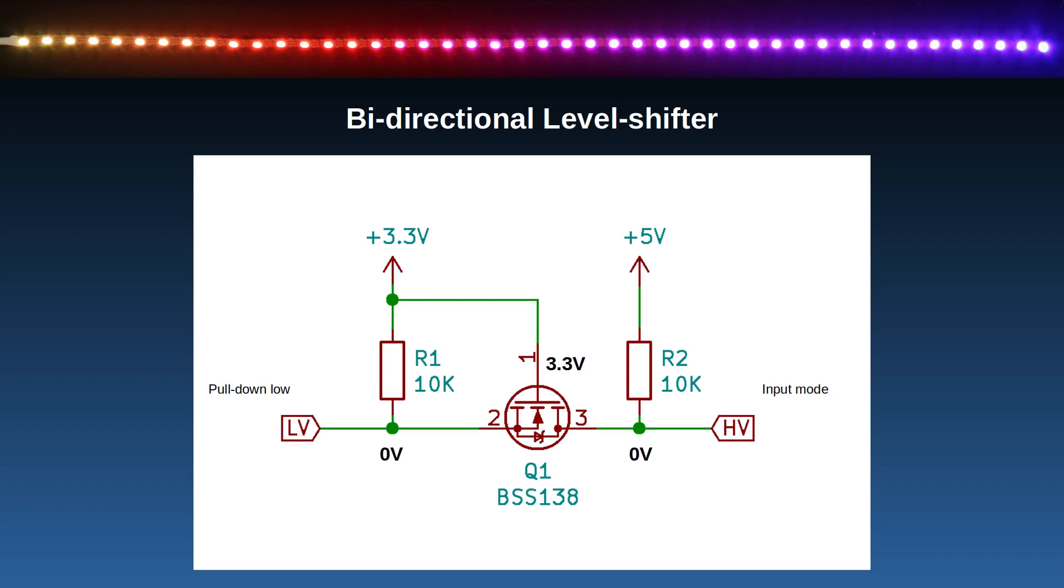When the low voltage side wants to output a low, then it connects its output to 0 volts through the open drain. This sets the source of Q1 at 0 volts, and with 3.3 volts at the gate, so the MOSFET turns on. The high end output, which is at the drain, is then pulled down through Q1, so this gives a logic level low at the HV side.